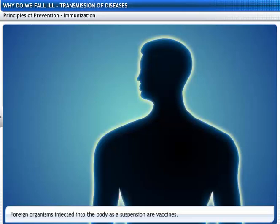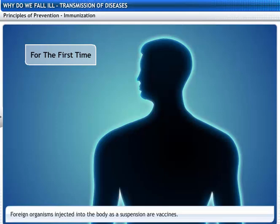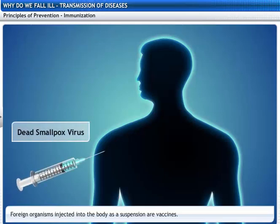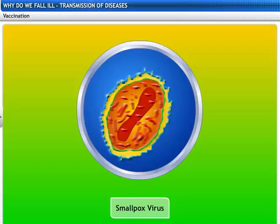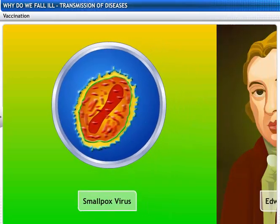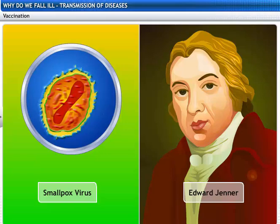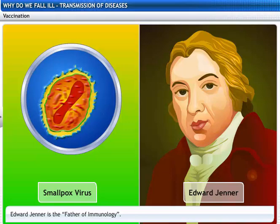However, you can prevent a virus like smallpox from infecting you the first time through vaccinations. In this process, foreign dead smallpox virus is injected into the body as a suspension. This is called a vaccine. The first vaccine was developed against smallpox by Edward Jenner and smallpox was completely eradicated.